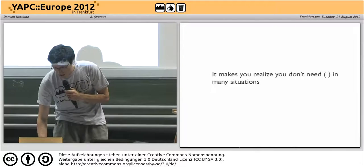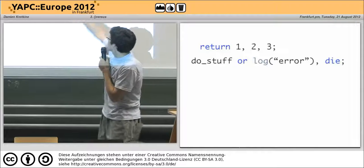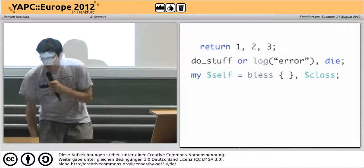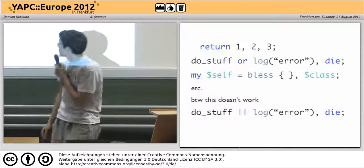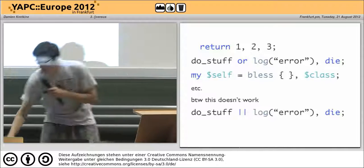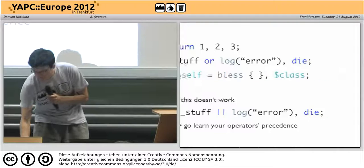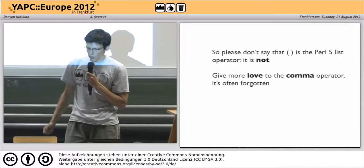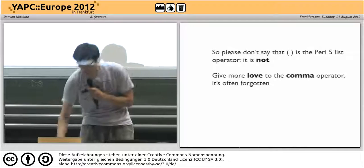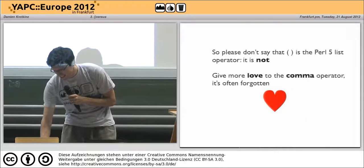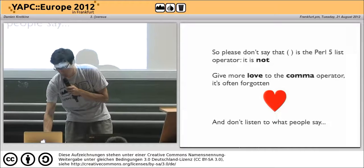Why is it useful to know? It makes you realize that you don't need parens in many situations. For instance, you can return 1, 2, 3 — that returns the list. You can do stuff or log some error and then die. Or you can do myself, bless, curly brackets, comma, class. By the way, this doesn't work: do stuff or log error die — because the precedence is very high for double pipe. So please go learn your operator precedence. Please don't say anymore that parens is the Perl 5 list operator. It is not. Give more love to the comma operator, because it's often forgotten — it's at the bottom of the operator list. And don't listen to what people say. Thank you very much.